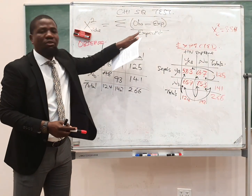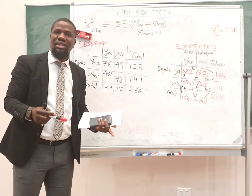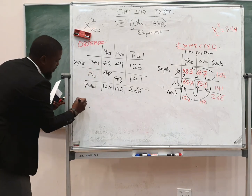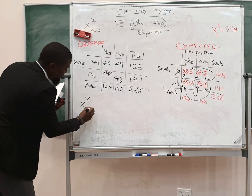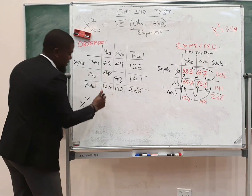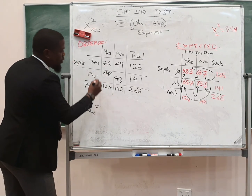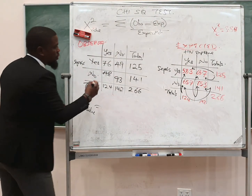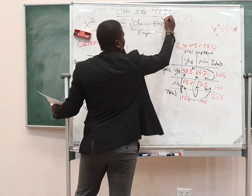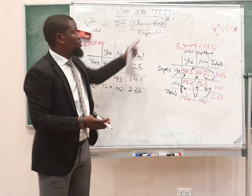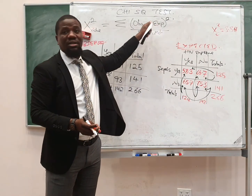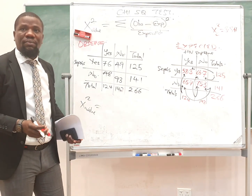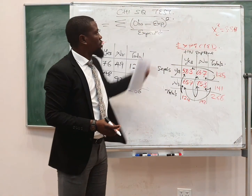So using this formula, let us go ahead and calculate the chi-squared. Let us start with this cell here. We are going to add the differences — the values that we are going up there. Sorry for that — this has to be squared. And it has to be squared because if you don't square this, it might actually just give you a zero at the end of the day. So this has to be squared.